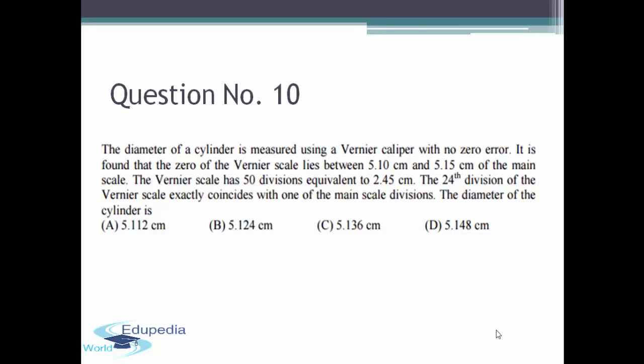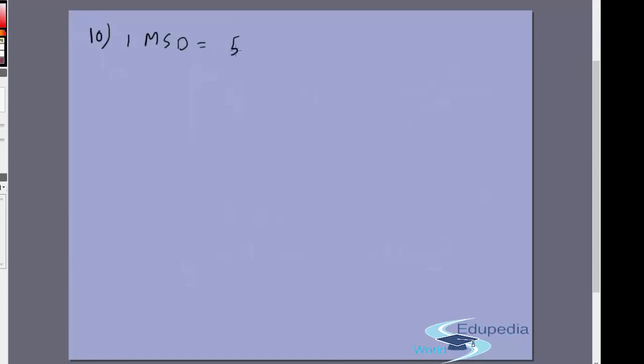First of all, let's calculate the standard parameters of the Vernier scale. One main scale division we can see is 5.15 centimeters minus 5.10 centimeters, or 0.05 centimeters. One Vernier scale division is 2.45 centimeters which corresponds to 50 divisions, so this divided by 50 gives 0.049 exactly.